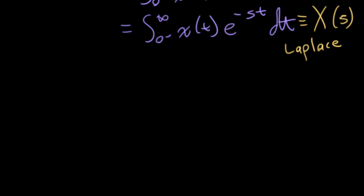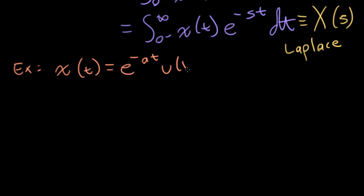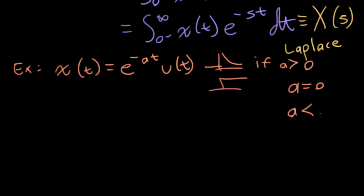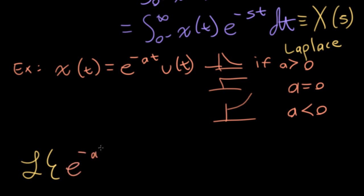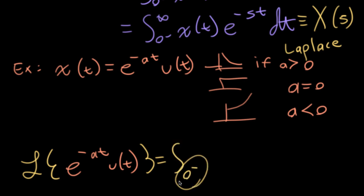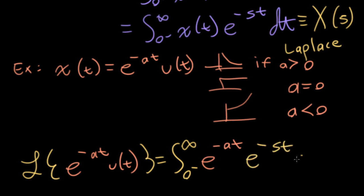Let's do an example — the same one we did for the Fourier transform. I'm going to write this as e to the minus at times u(t). This is a decaying exponential that starts at zero if a is bigger than zero. But now with this Laplace formalism, a could be equal to zero, in which case this would just be a unit step function, or a could be less than zero, in which case this would be an expanding exponential. I can handle all of these cases now.